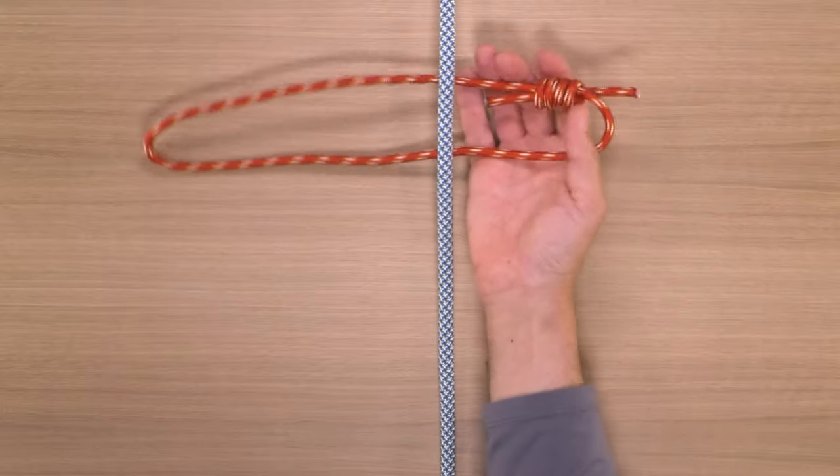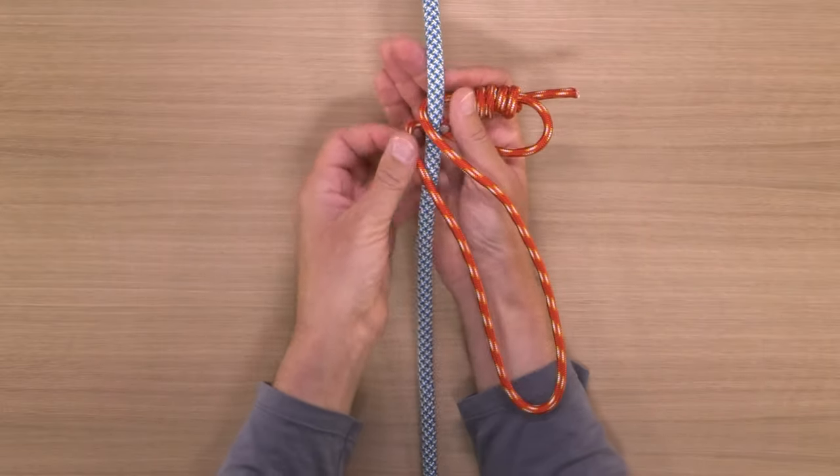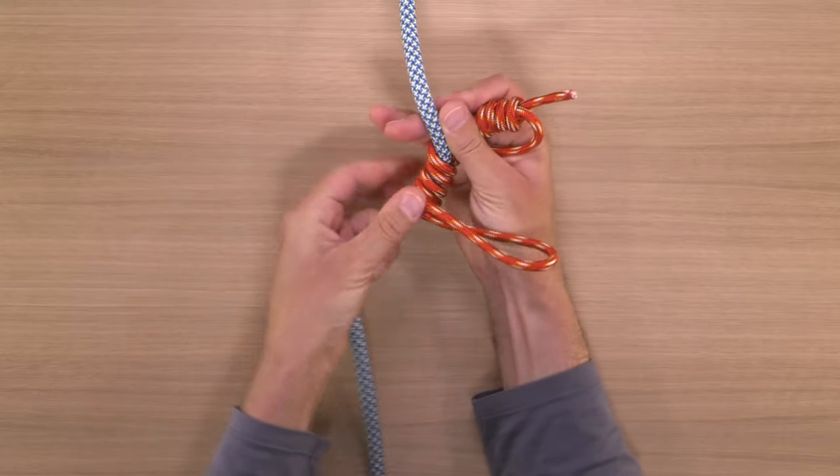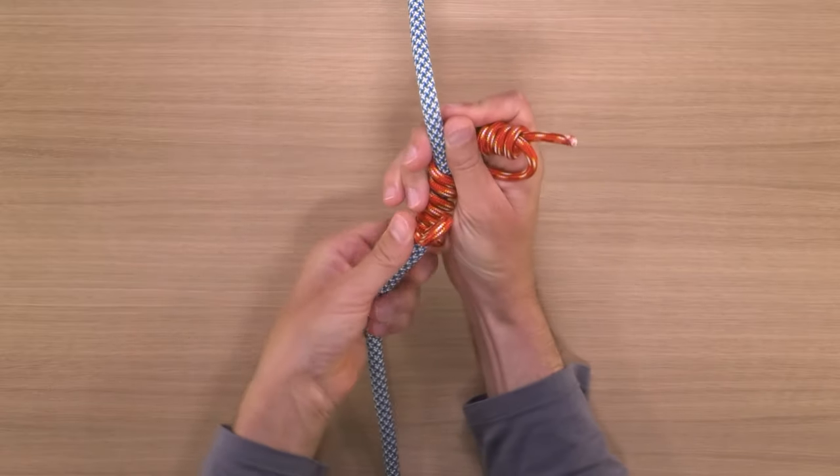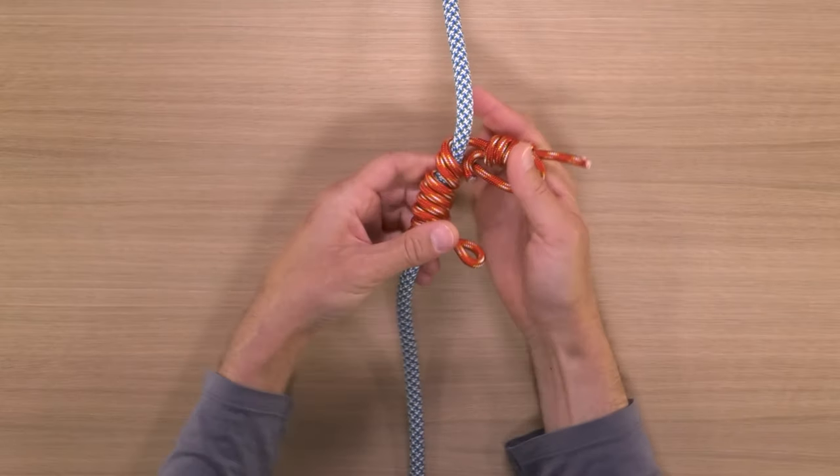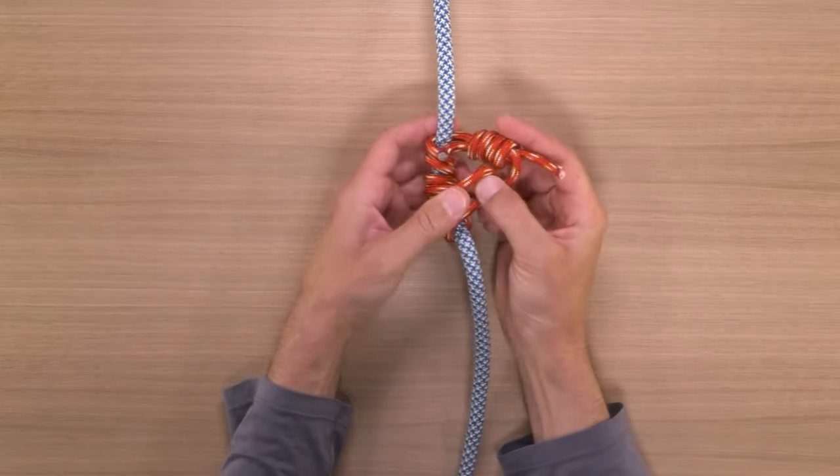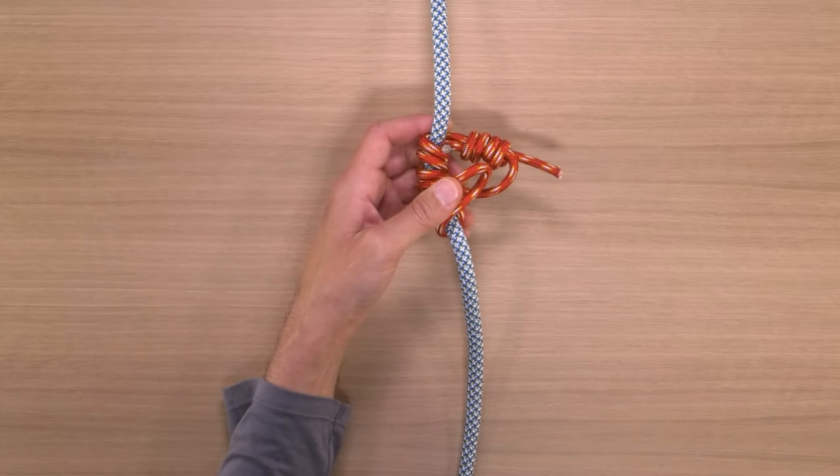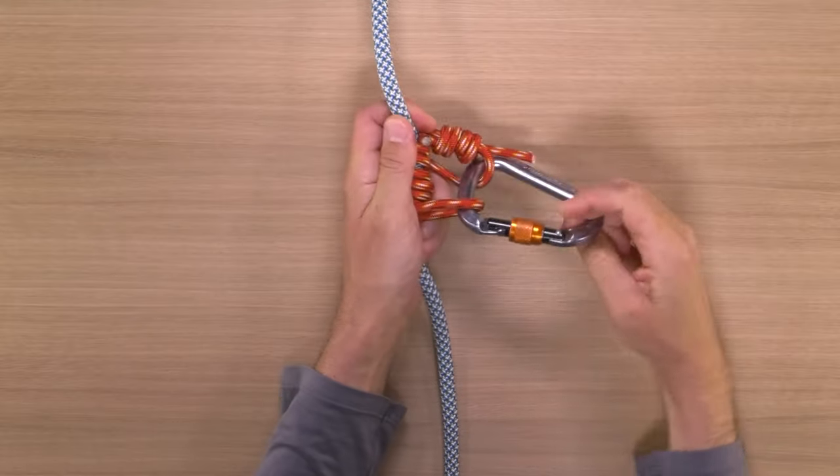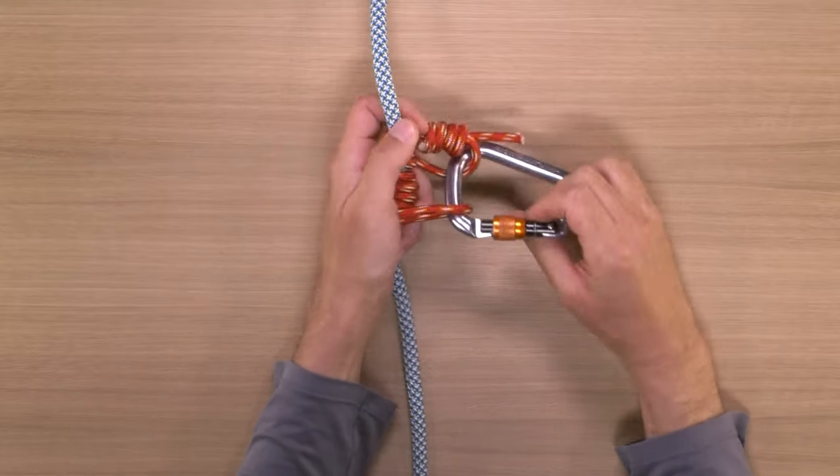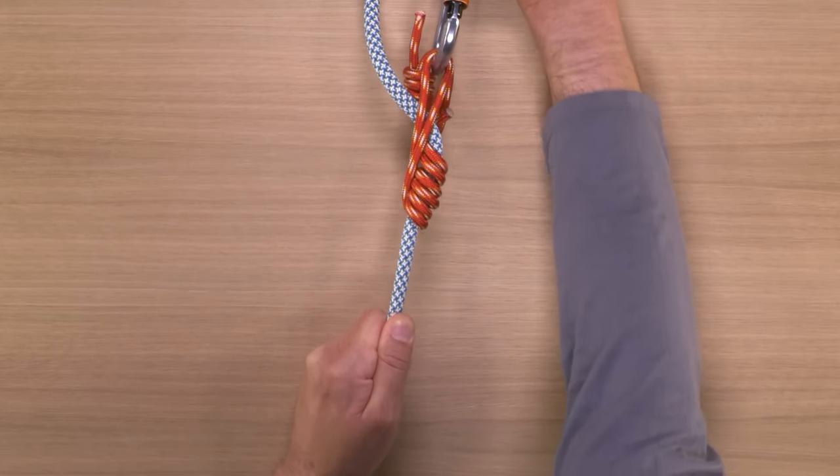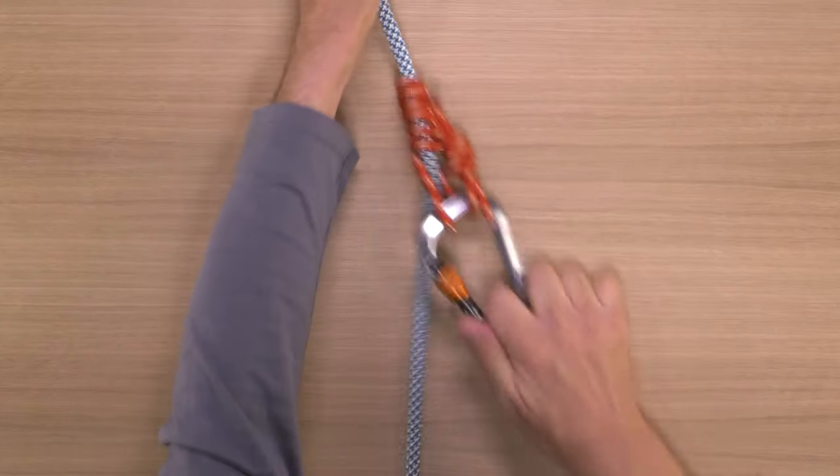An autoblock is the simplest friction hitch. Take your loop of cord and wrap it around the rope. The number of wraps will depend on the relative diameter of the cord and the rope, and how new and slippery they are. When you have what you believe to be the right number of wraps, clip through both ends of the cord. And then, to make sure you've tied an adequate friction hitch, you must always test your friction hitch. You should certainly test it in the expected direction of pull, and you may as well test it in the other direction, too. This will help it dress a little nicer.